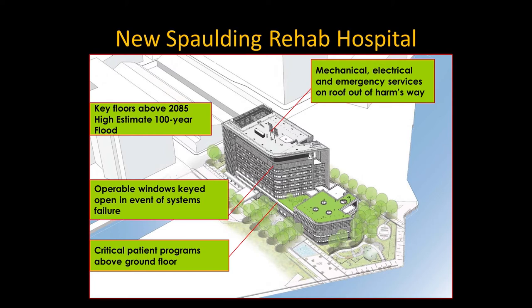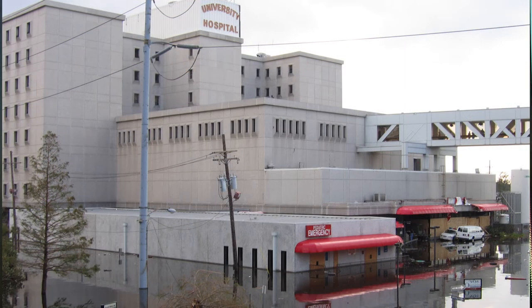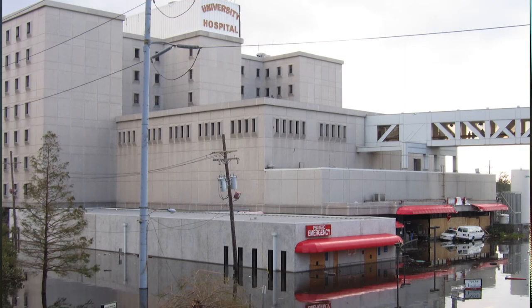Even better, mechanical, electrical, and emergency services are located on the roof, isolated from the flooding and the waves during a coastal storm. All operative windows are keyed to open in the event of system failure — that's a direct response by hospital designers to Hurricane Katrina, where they had to break windows to get fresh, healthy air for patients when the power went out for many days at a time.